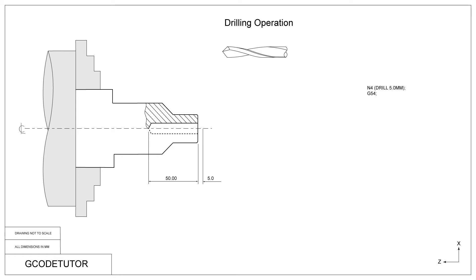Now we add G54 which is our datum call command. In the machine we have already preset the datum to be the front face of the job, so Z0 is the front face of the job. On this block we give the machine a few different commands. We start with G00 which tells the machine to go into rapid mode — this is for future movements that we're going to use after this block.